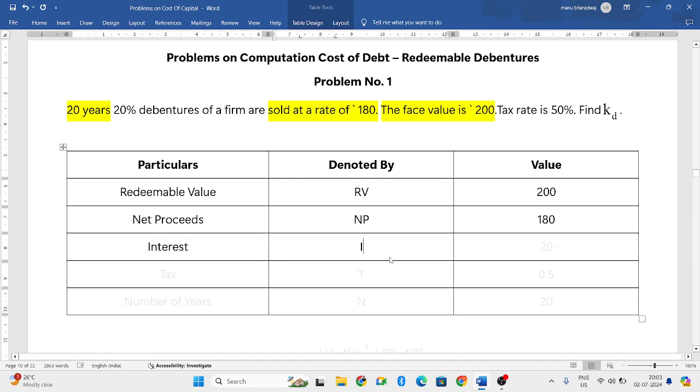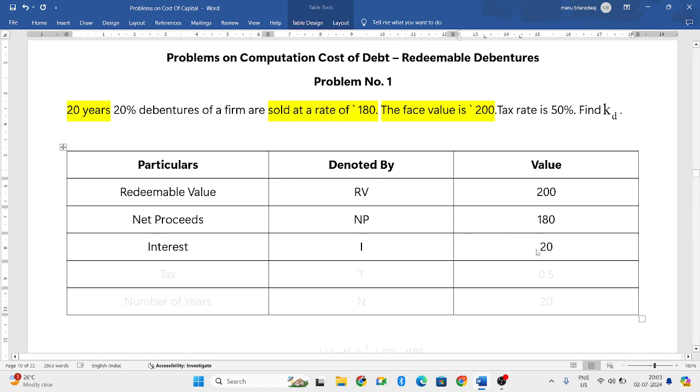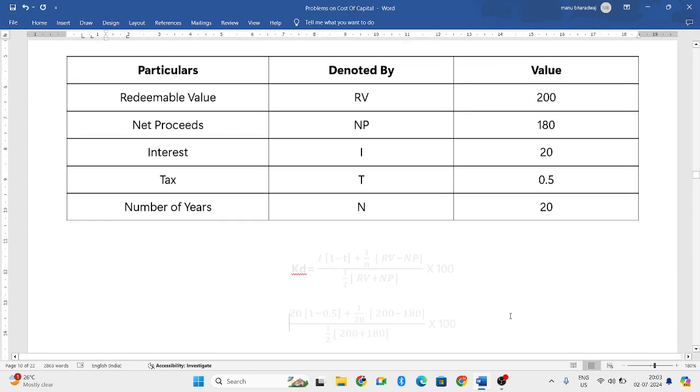Interest. Interest rate itself will become the interest, so 20. Next, tax. They have given it as 50%, so you need to convert it into decimals. You will get 0.5. Number of years, also they have given. That will be denoted by N. So the value will be 20.